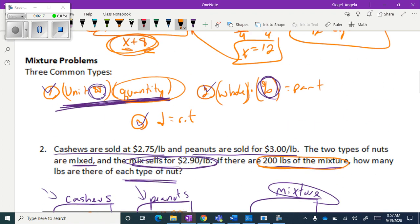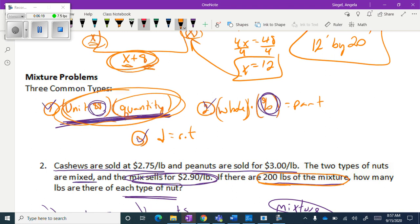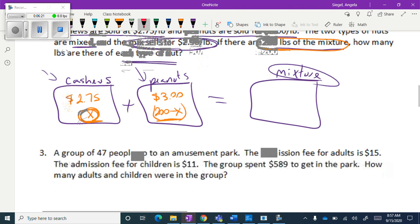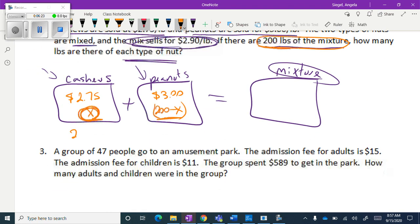Again, let's come up here. We're going to be multiplying these together. So I'm going to multiply the cashews with the cashew price with the quantity and get 2.75x. I'm going to multiply the three. Think about this in algebra terms. We're going to distribute that. So we have 600 minus 3x equals...